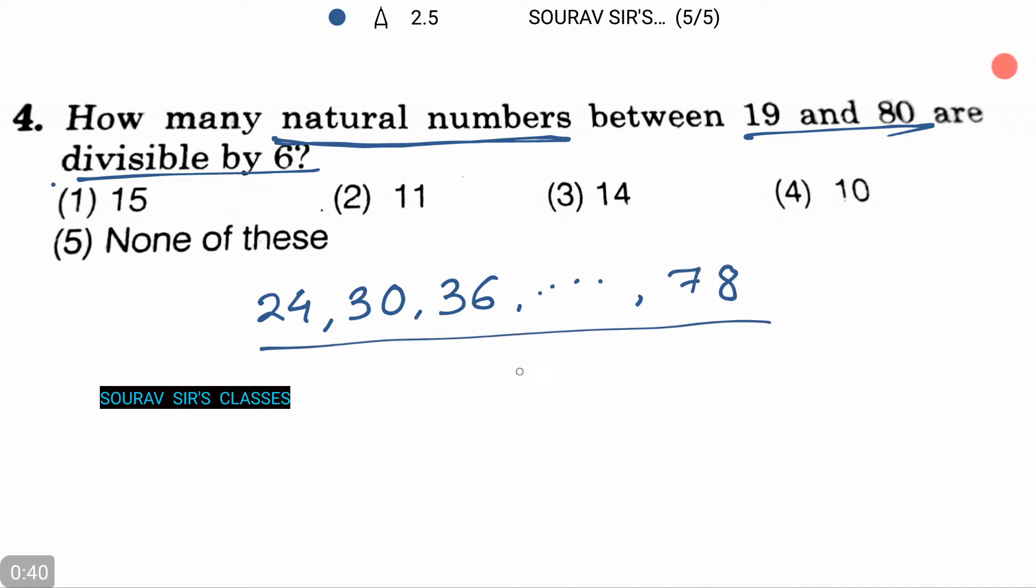And we can clearly see that it's an AP series, that is arithmetic progression series. And the first term of this series we can denote it as A. I repeat, the first term of this series we denote as A, that is 24.